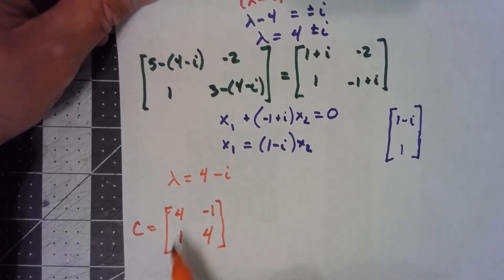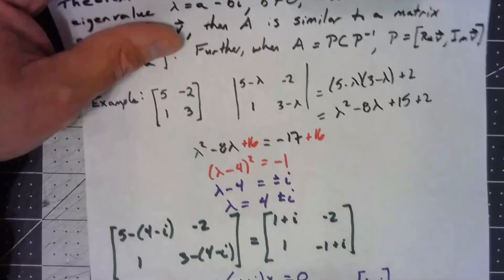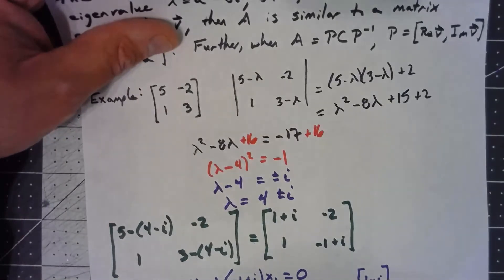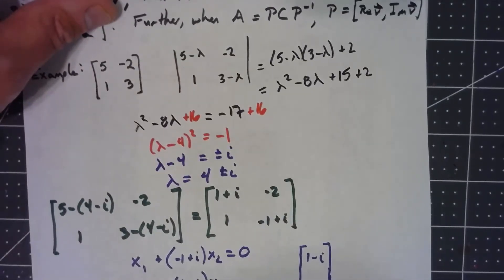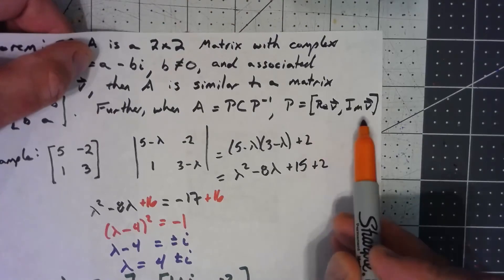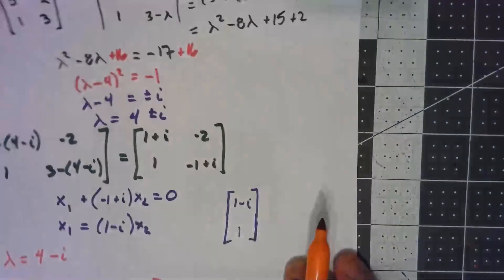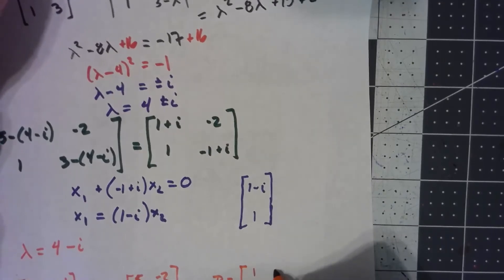Again, very close to a symmetric matrix. My A matrix, well, my A matrix is the one I started with, the [5, -2; 1, 3]. But the P matrix is what I take with the real parts of the eigenvector and the imaginary parts of the eigenvector. The real parts are [1, 1], the imaginary parts are [-1, 0].